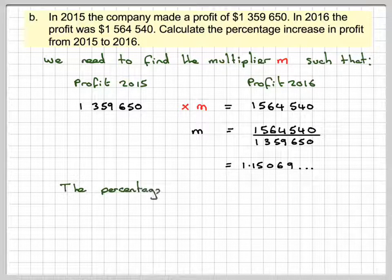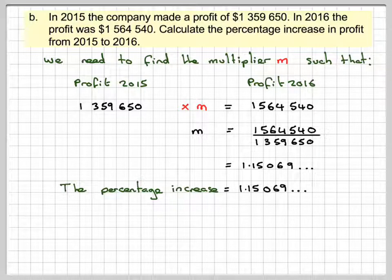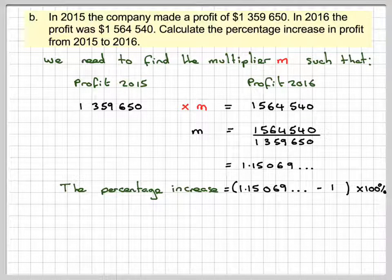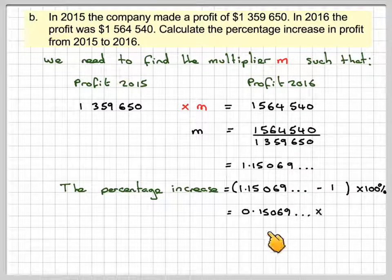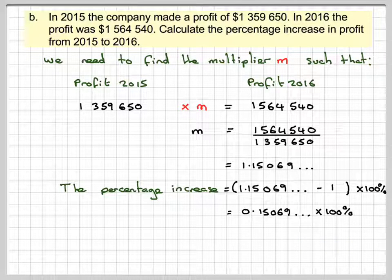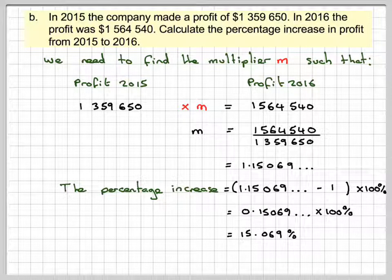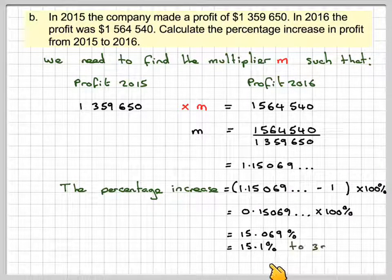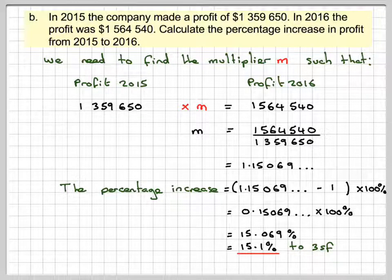To find the actual percentage increase that this represents, you need to do 1.15069, take away 1, and multiply it by 100. So, it's going to give 0.15069 times 100, which is 15.069%, which is 15.1%, correct to three significant figures.